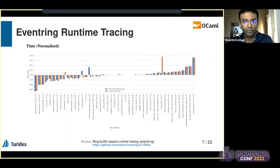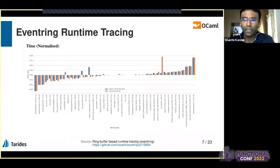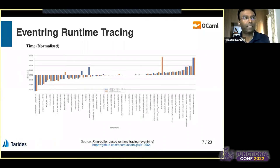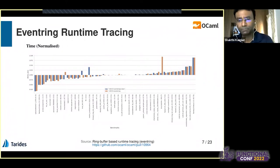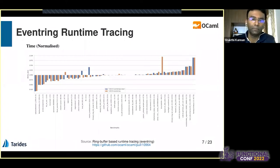Another example is runtime tracing. This is an ongoing PR where we want to have instrumentation and tracing from the runs. The main idea is: if you take a sequential program and run it on the parallel runtime as well, there should not be much difference between sequential and parallel runtime performance. Here we didn't see much deviation, and the PR is currently being reviewed.